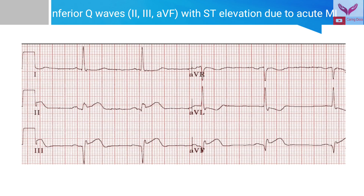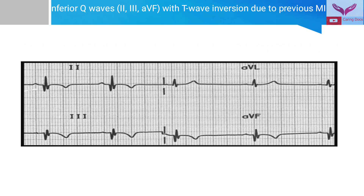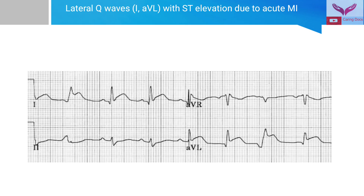Here we can see inferior Q-waves, i.e. Q-waves in leads 2, 3 and AVF with ST elevation due to acute MI. In the ECG we can see Q-waves in leads 2, 3 and AVF with T-wave inversions due to previous MI.